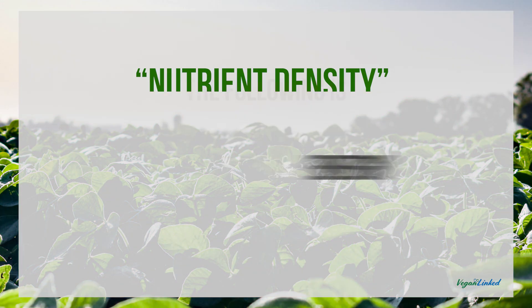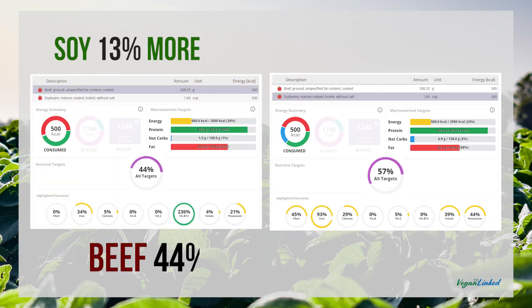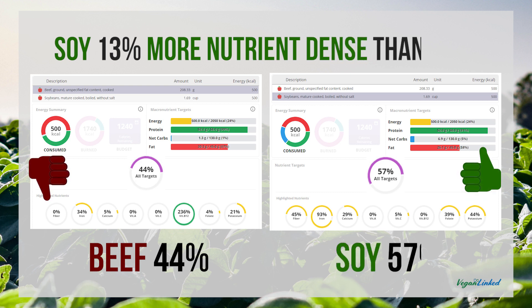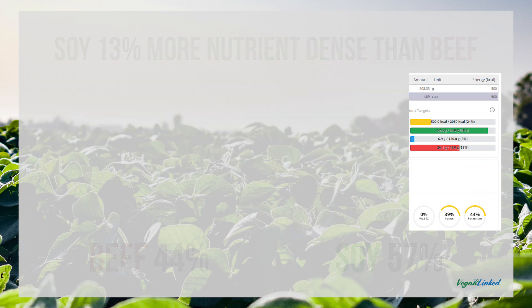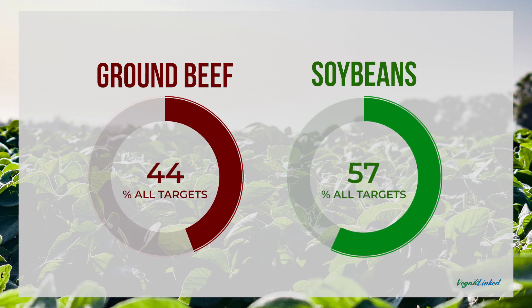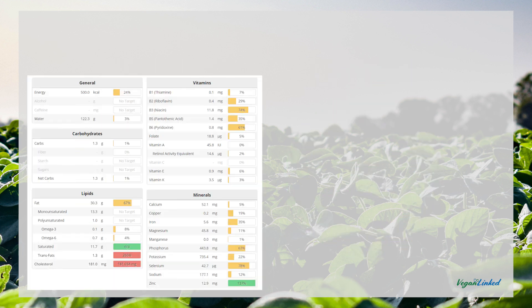The following nutrient profile demonstrations are based on 500 calories using USDA data. When comparing soy to beef, soy is 13 percent more nutrient-dense than beef. Soy reached 57 percent of all nutrient targets, whereas ground beef only met 44 percent of all nutrient targets.